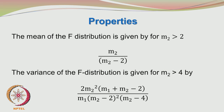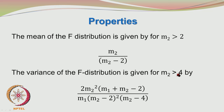The mean of the F distribution is given by M2/(M2 - 2), and the variance is given by 2·M2²·(M1 + M2 - 2) divided by M1·(M2 - 2)²·(M2 - 4). To ensure these parameters do not blow up, M2 must be greater than 2 for the mean, and M2 must be greater than 4 for the variance.